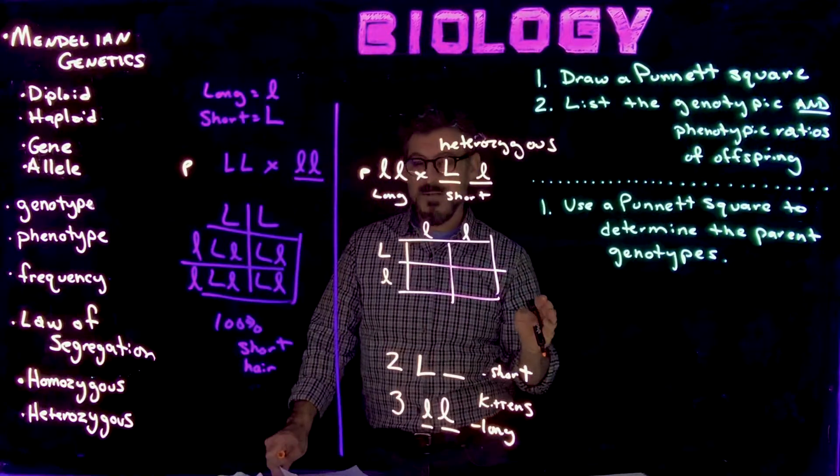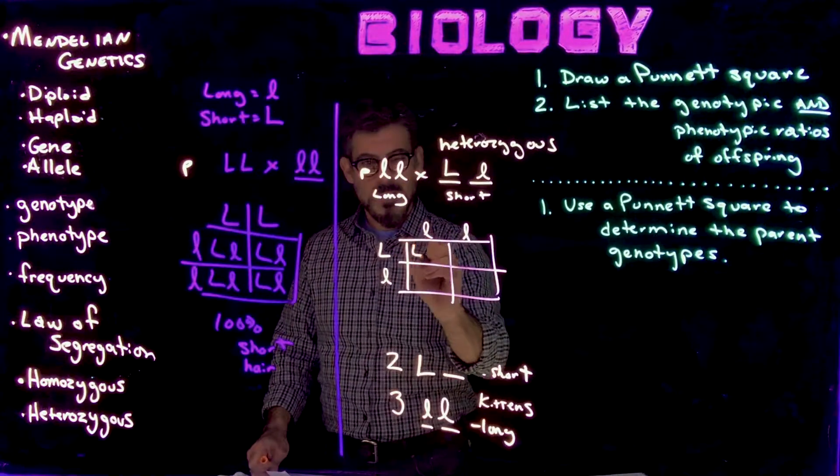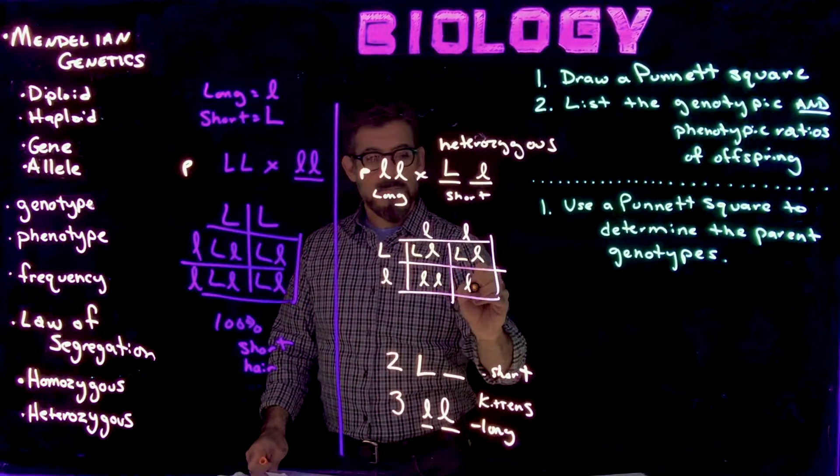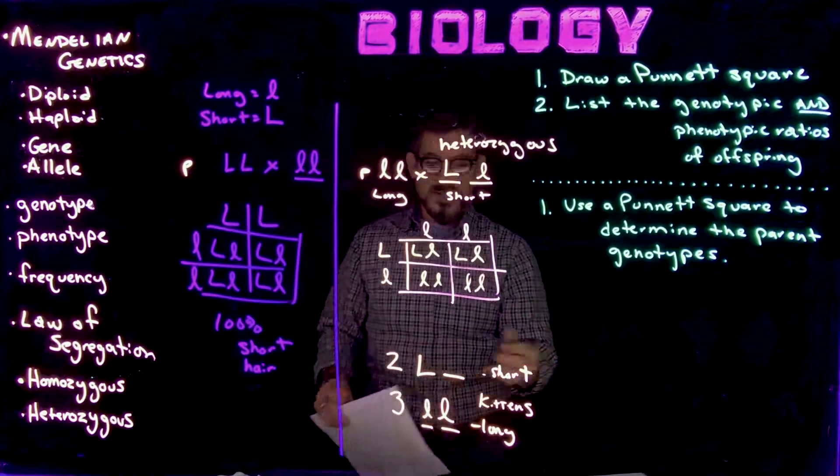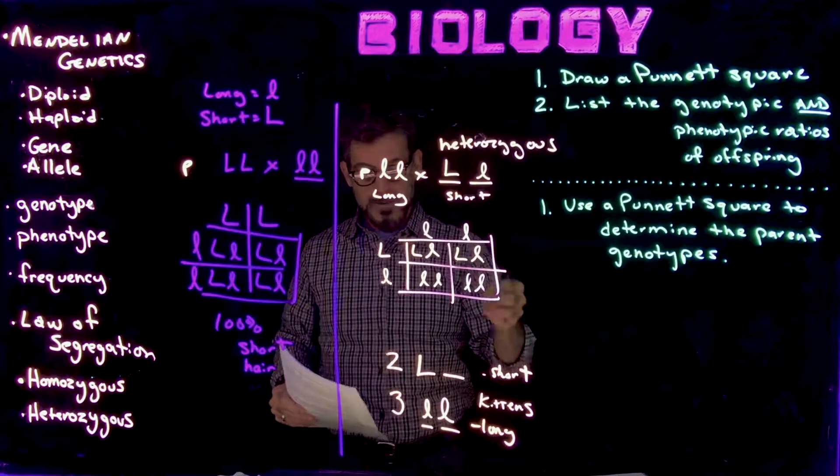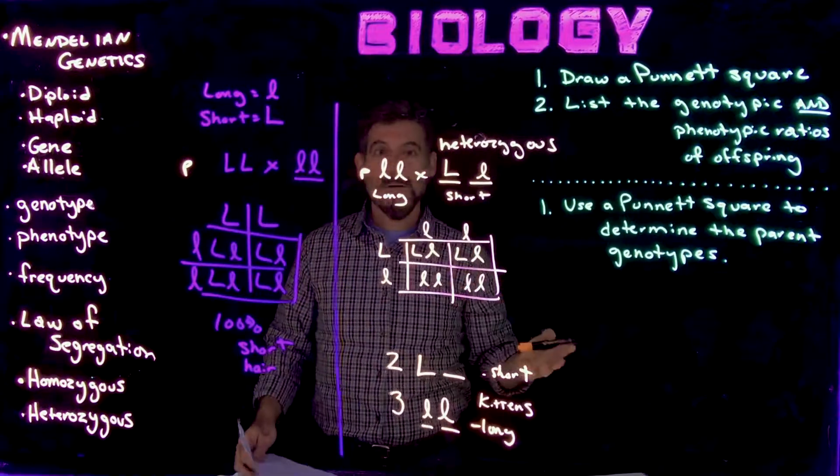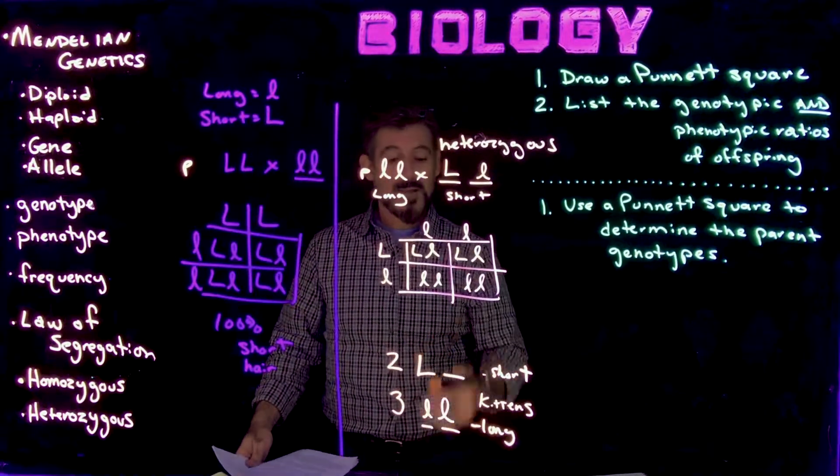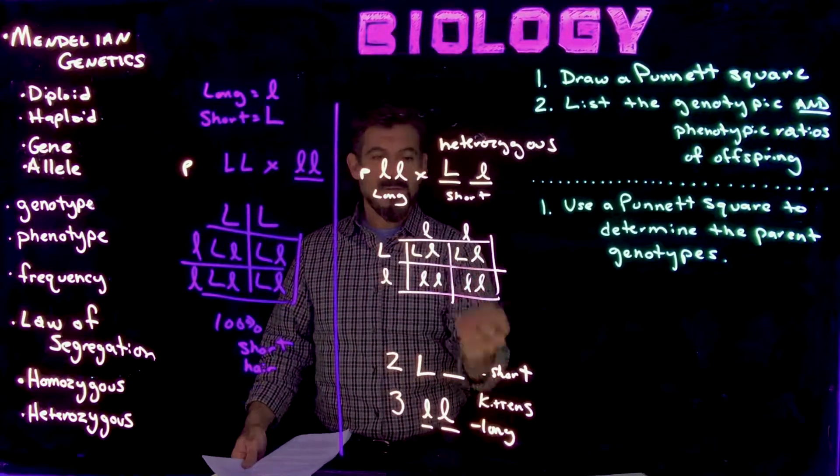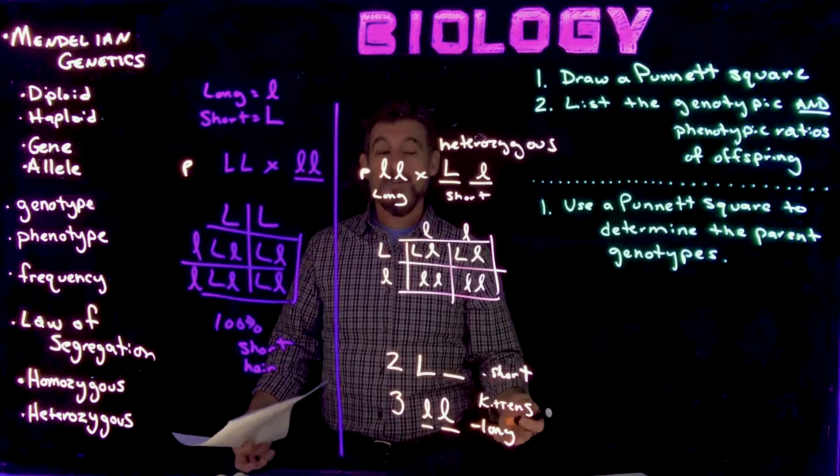Alright, hopefully that makes sense. So now see here, L, l, L, l. I know this isn't exact 50-50, because there's only five individuals. If there were 500 or 1,000 individuals, which would be kind of crazy for mammals to have that many offspring, but that's the idea here that they're pretty close to each other, and this is roughly a 50-50 ratio is what you would end up with.